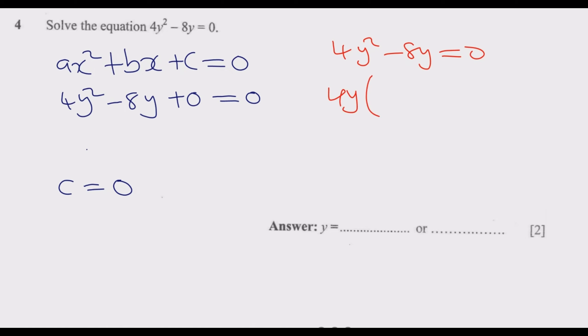Then use a different color. 4 into 4 is a 1. Y into y square is y. Y times 1 is y. Then 4 into negative 8 is a negative 2. Then y into y is a 1. 1 times negative 2 is basically negative 2.